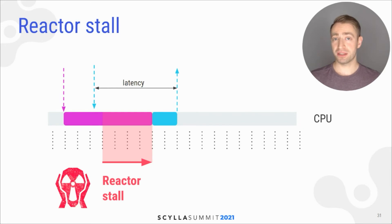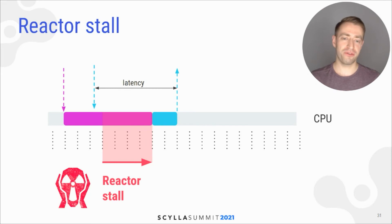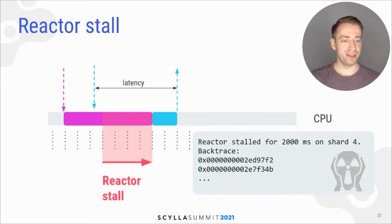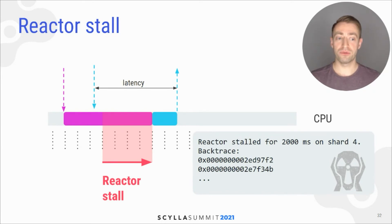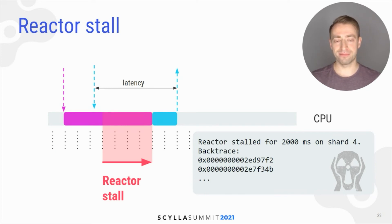When a task doesn't respect preemption, we have an event called a reactor stall, which is very bad because it increases latency. So we have a watchdog which detects those and logs them together with a backtrace so that we can identify the disobedient code and fix it.